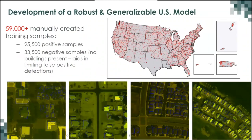Once the image mosaic is built, a convolutional neural network is trained to identify and delineate building detections in the satellite imagery. Training is done using 500×500 pixel image chips that analysts manually digitize. About 60,000 image chips have been completed for the United States, with just over 25,000 positive samples — chips that actually contain a building. The network is also trained on negative samples (chips with no building, such as a lake or agricultural field) to reduce the false positive rate.